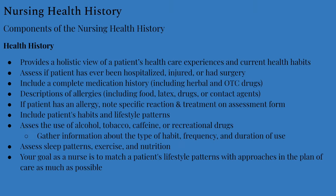When collecting health history, assess if the patient has been hospitalized, injured, or had surgery. Include a complete medication history including herbal and over-the-counter drugs. Note any allergies — the specific reaction and treatment, including reactions to food, latex, drugs, or contact agents like soap. Ask about previous problems with medications or food to clarify the type, amount, and reaction to the agent. Include the patient's habits and lifestyle patterns — assess the use of alcohol, tobacco, caffeine, or recreational drugs, which helps determine risk for liver, lung, heart, or nervous system diseases. Assessing sleep patterns, exercise, and nutritional habits also plays a big role in planning nursing care.